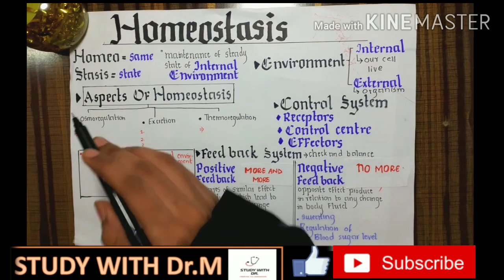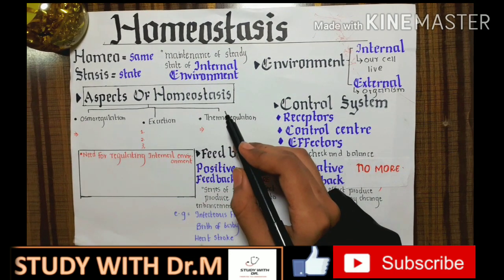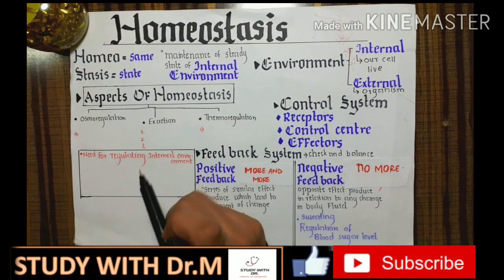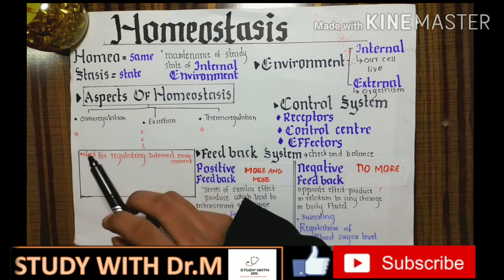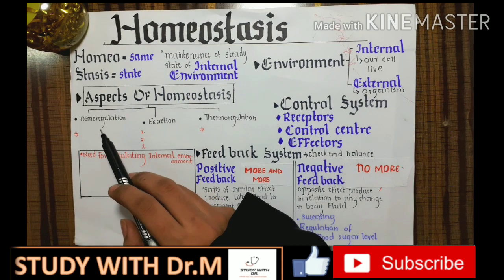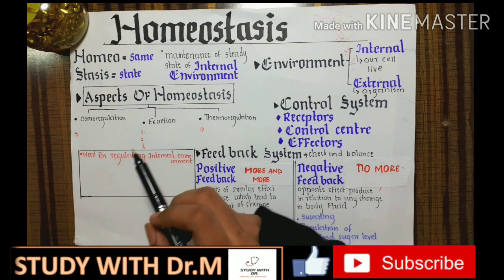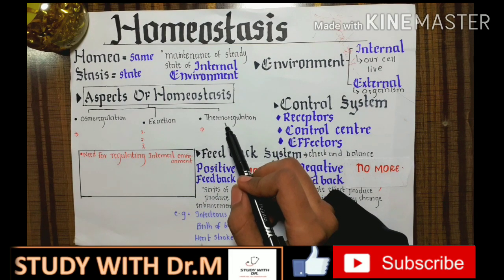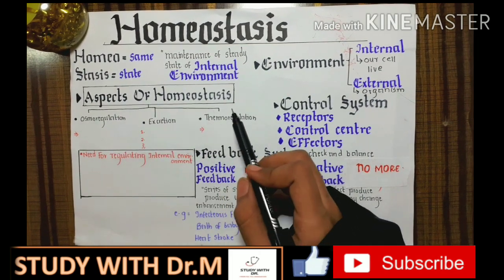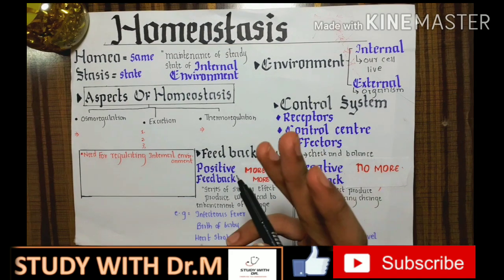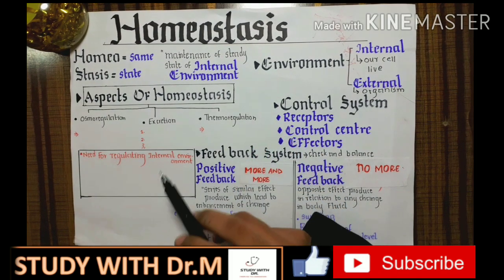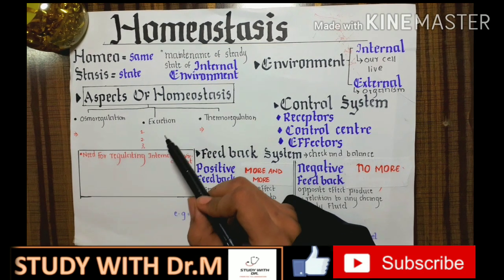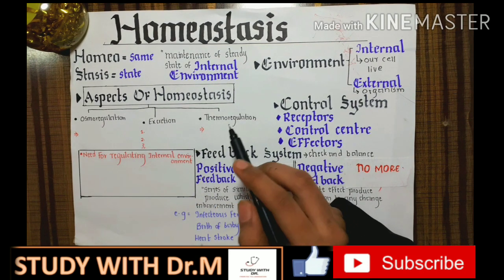Now let's come to the aspects of homeostasis. There are three aspects of homeostasis: osmoregulation, excretion, and thermoregulation.